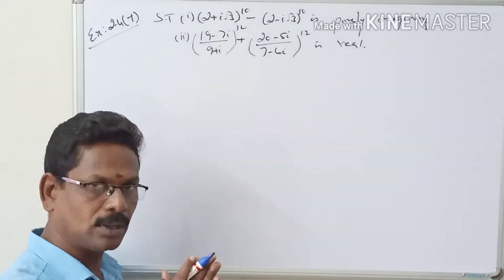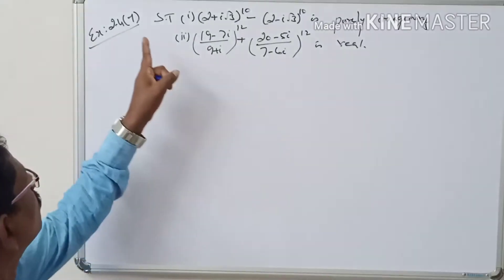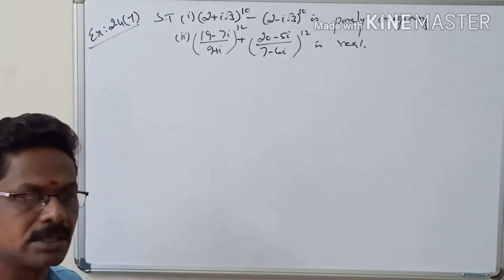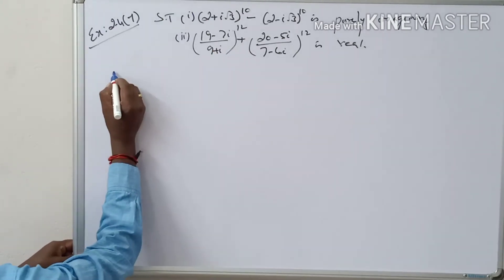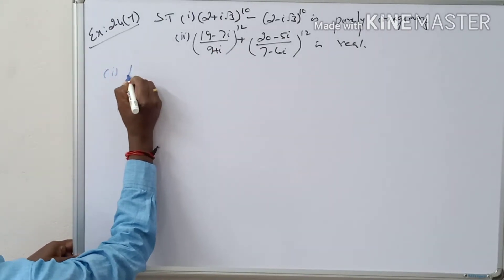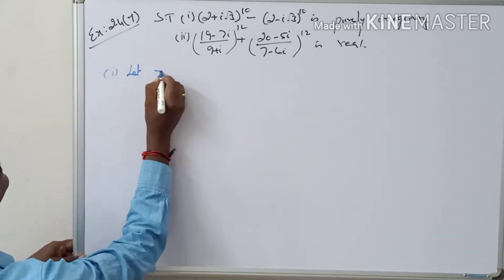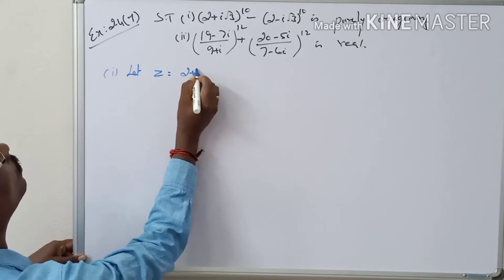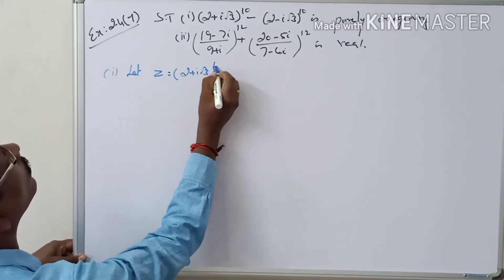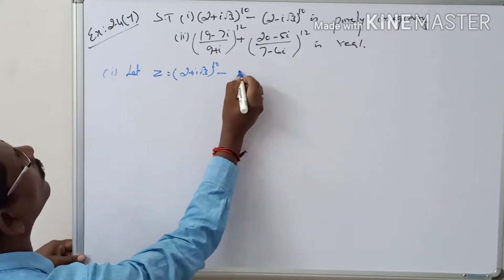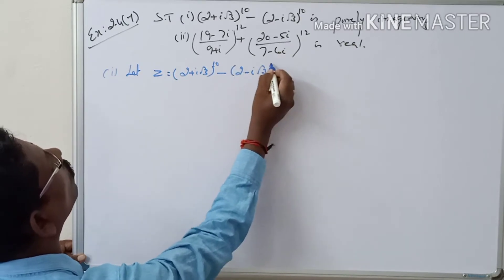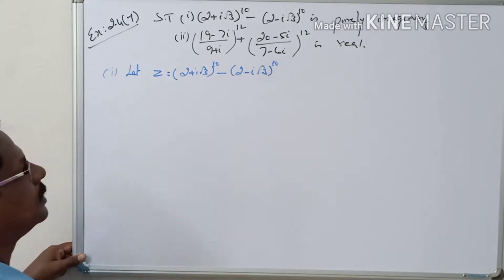Good morning students. Exercise 2.47, the sum. For the first part, take z equal to (2 + i√3)^10 minus (2 - i√3)^10.